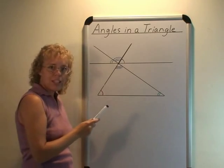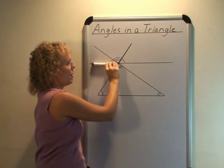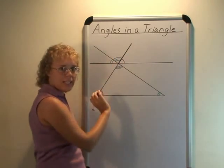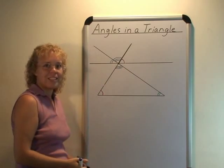And now we have all three angles of the triangle lined up here so that they form one straight angle together so these three angles add up to 180 degrees.